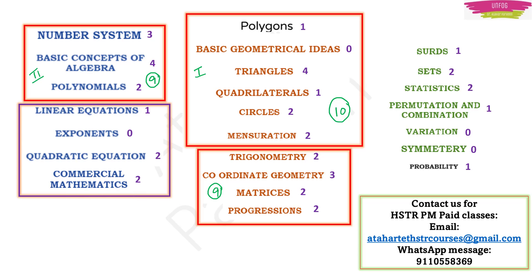The fourth group includes Linear Equations, Quadratic Equations, Exponents, and Commercial Mathematics. Linear and Quadratic Equations may have logic-based questions. Exponents is very easy — we have learned it since primary school. For Commercial Mathematics, if you find certain parts tougher, you can skip some portions depending on importance. Covering this group will help you score five marks — five questions answered correctly.